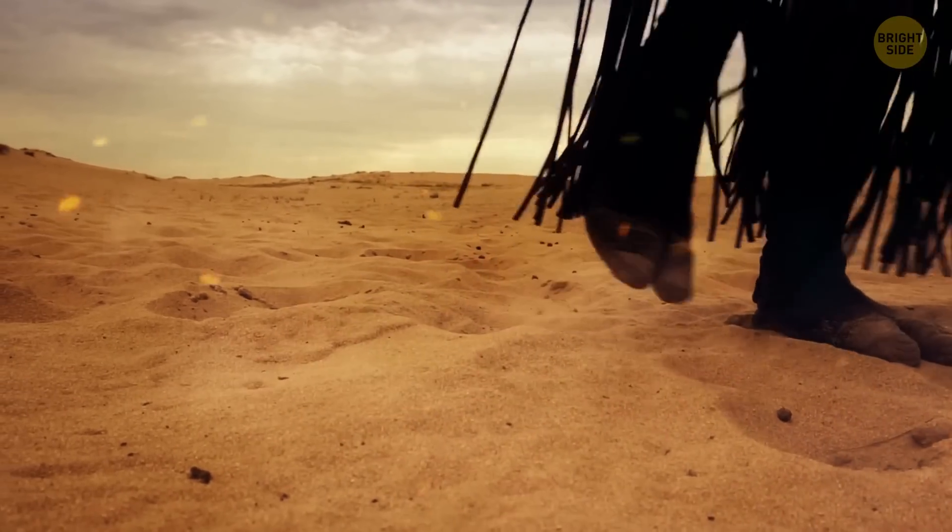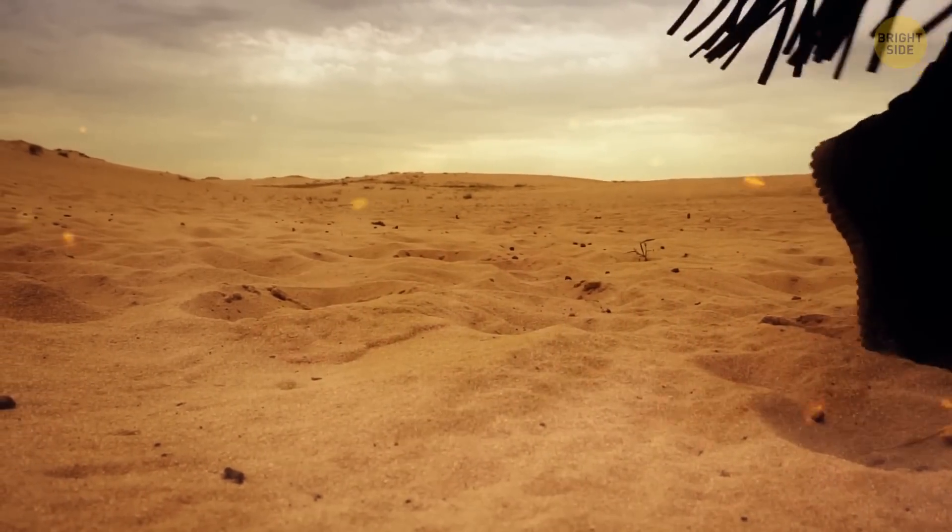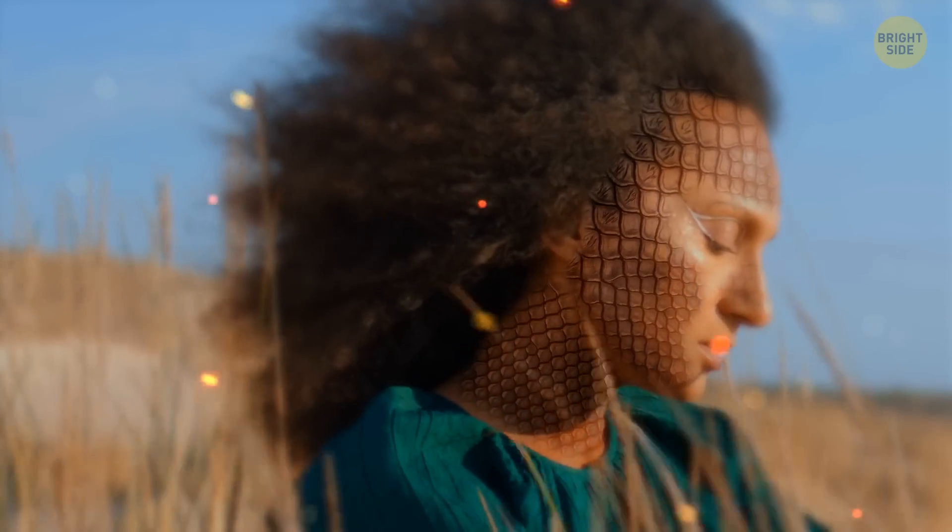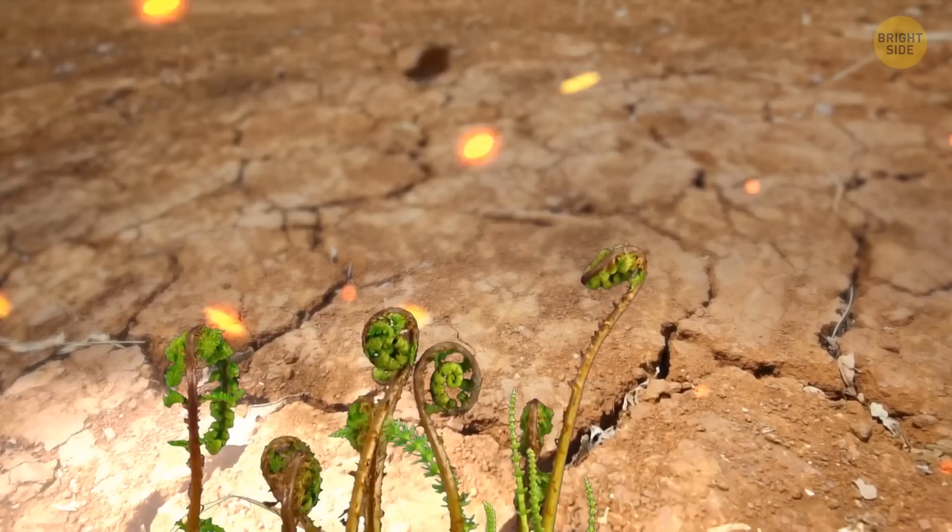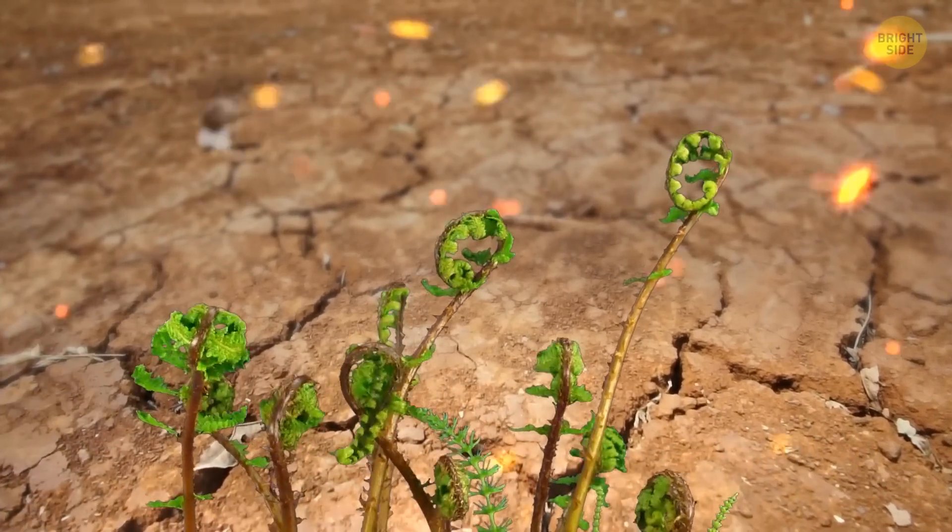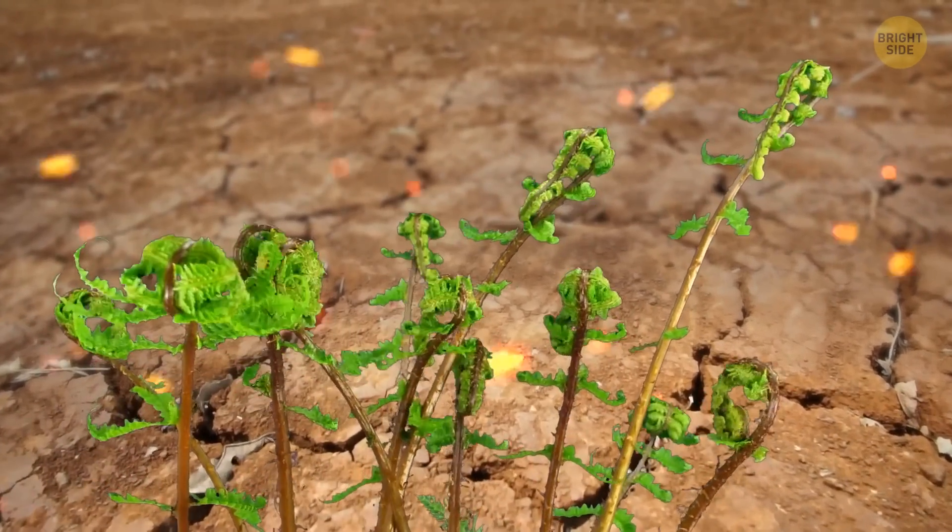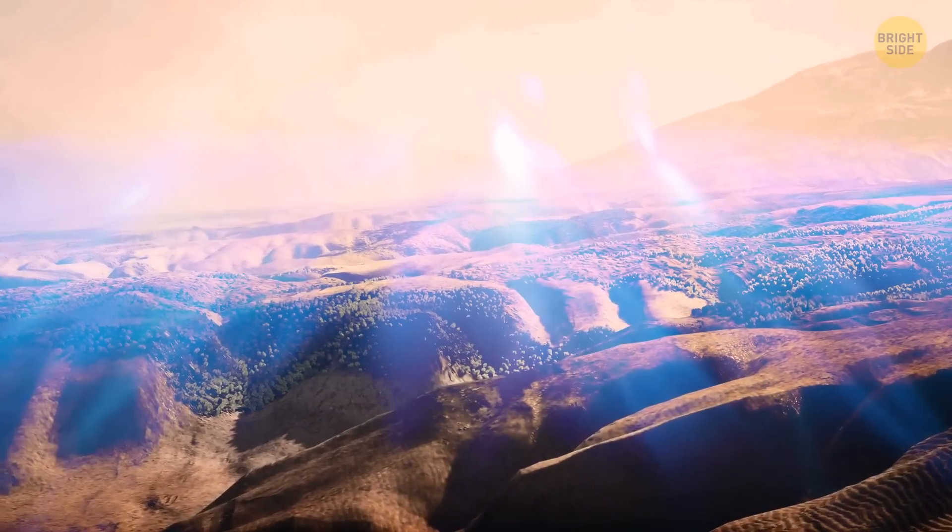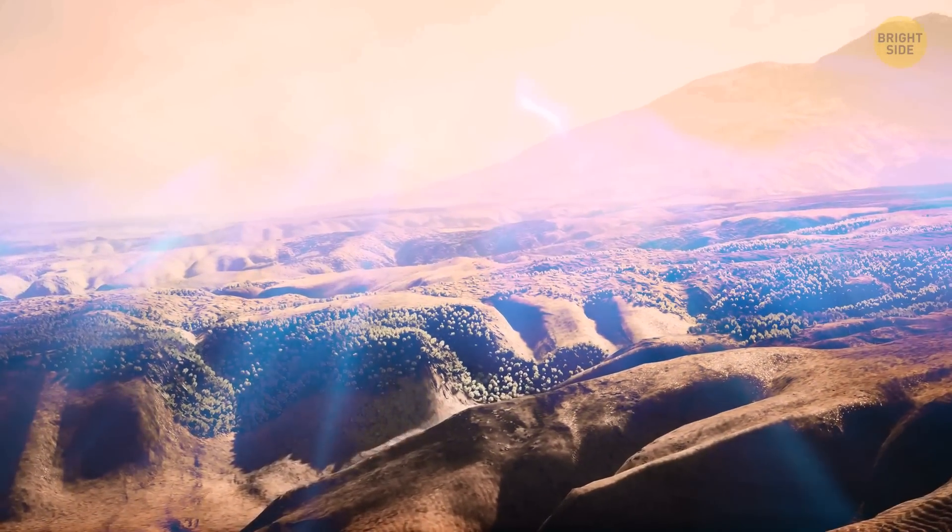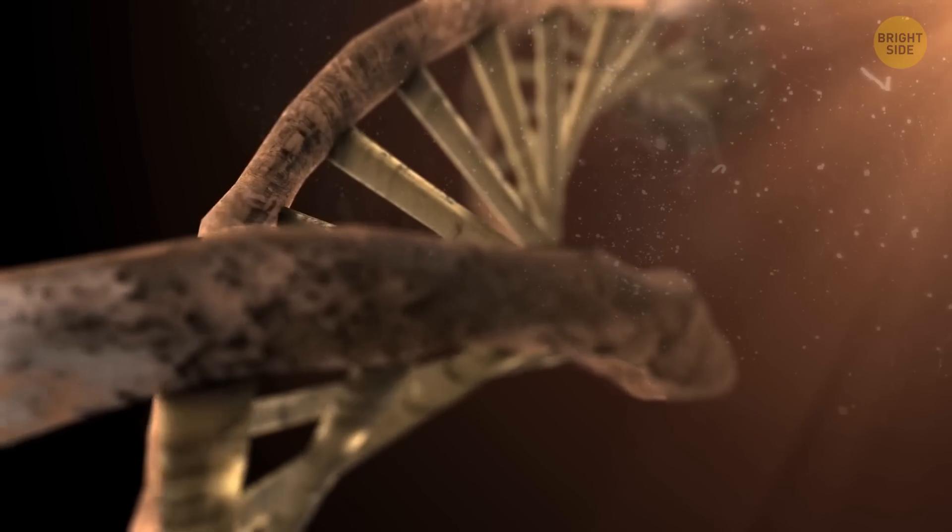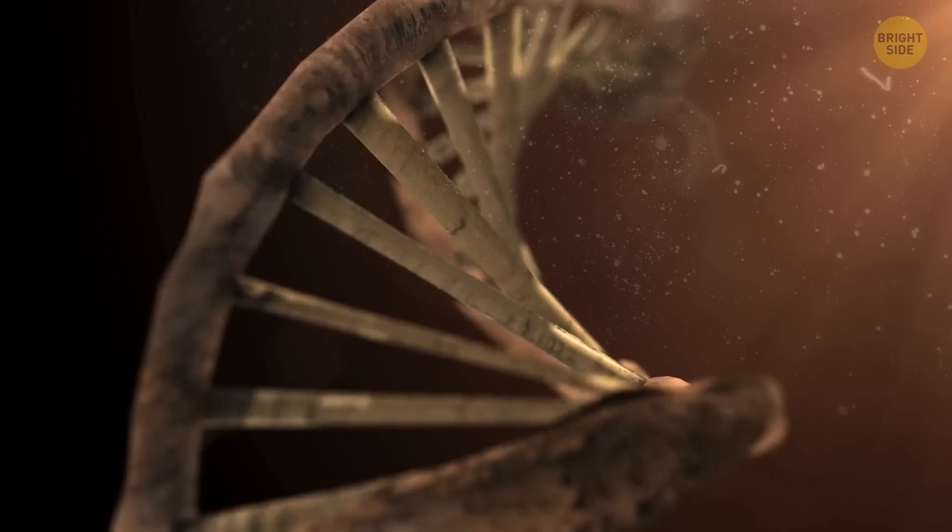So let's imagine what would happen if we somehow evolved to survive in these harsh conditions. Like, picture humans with tough, scaly skin that protects them from radiation, and plants with unique structures that allow them to thrive in this bright environment. In that case, radiation could still have some seriously spooky effects on us. For example, it could damage DNA molecules and cause mutations.